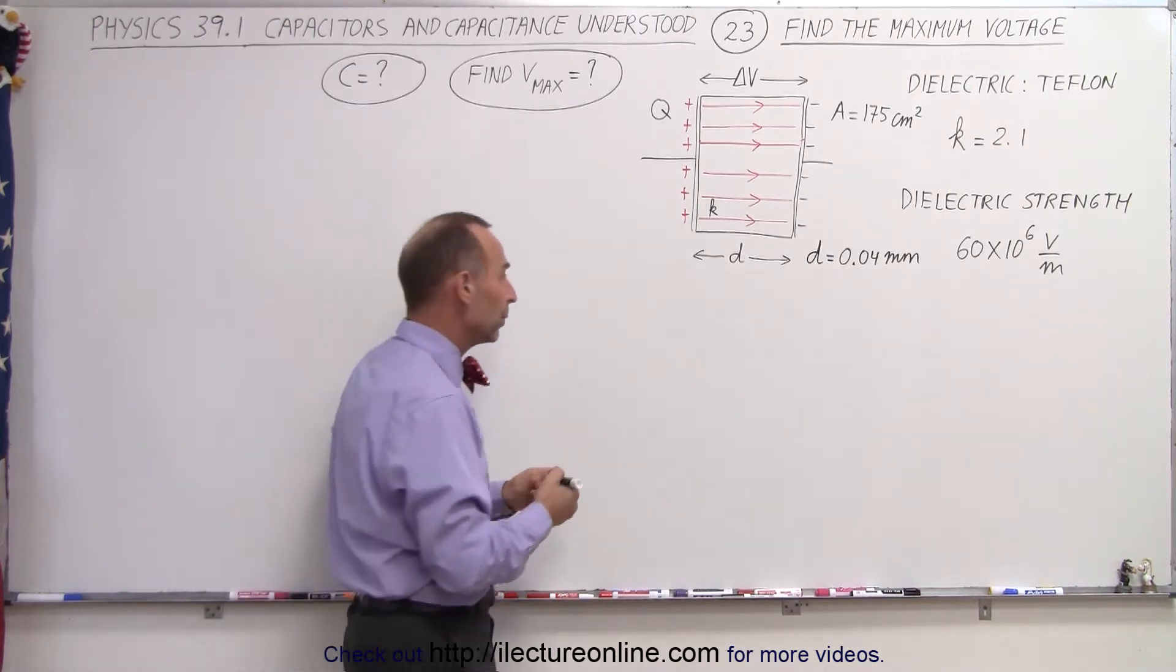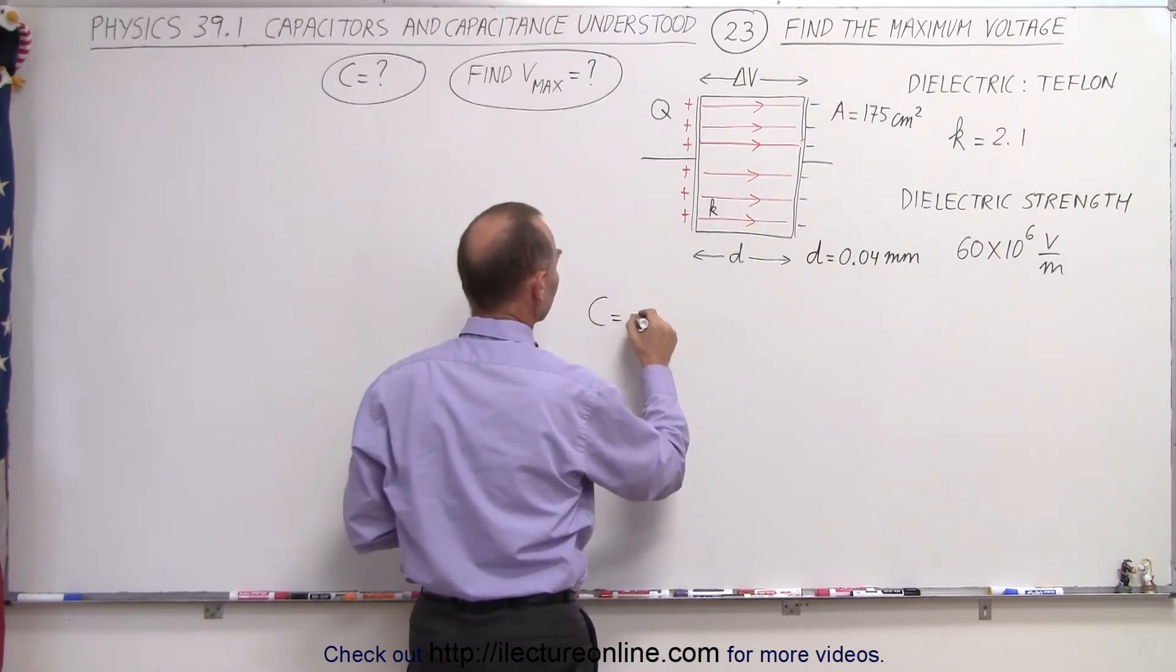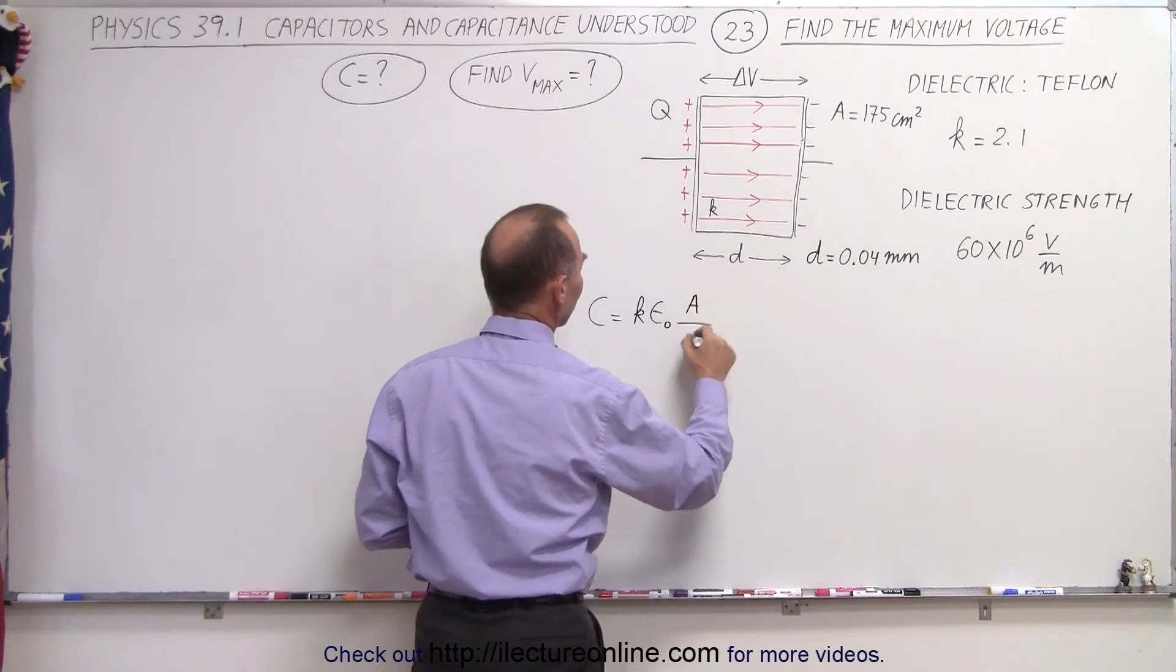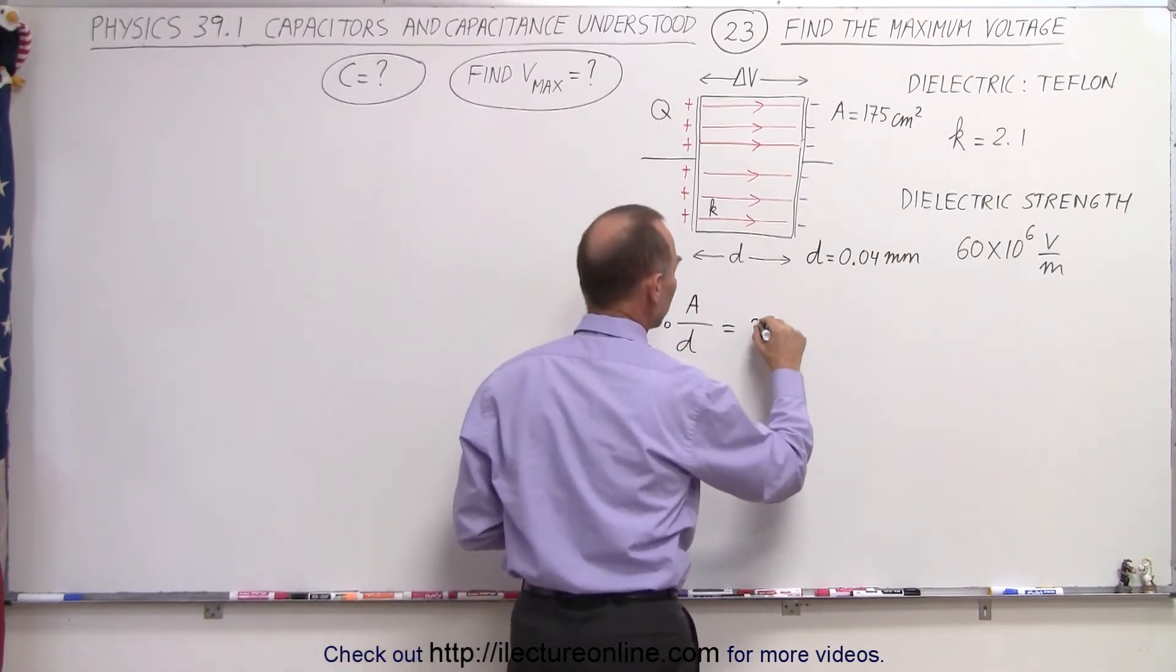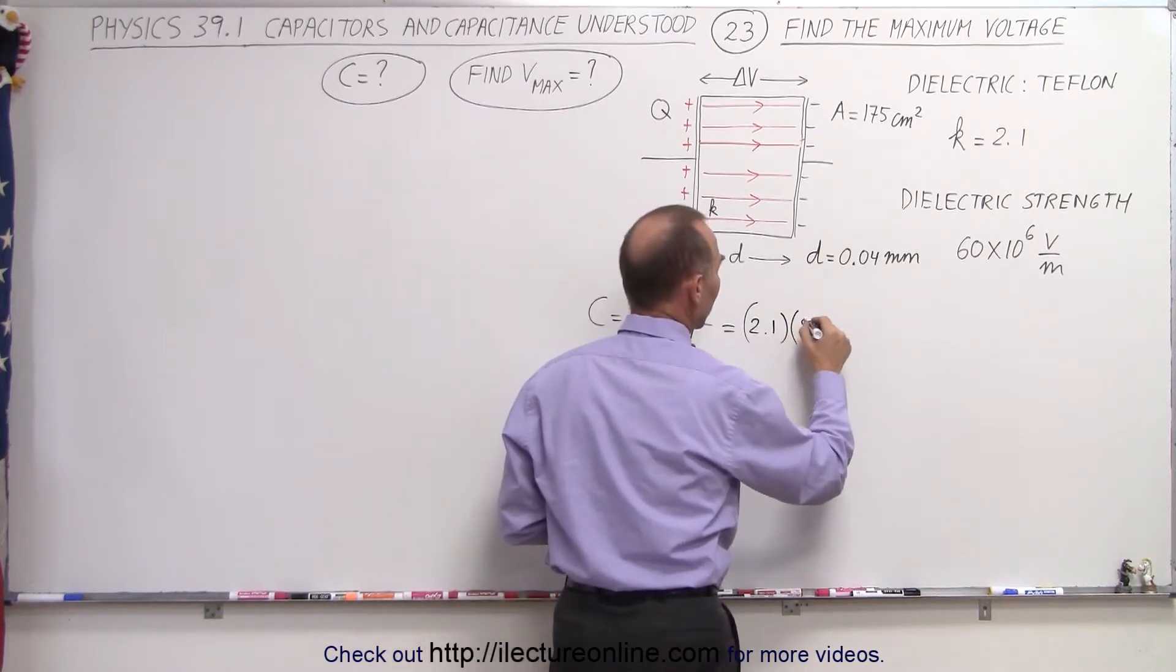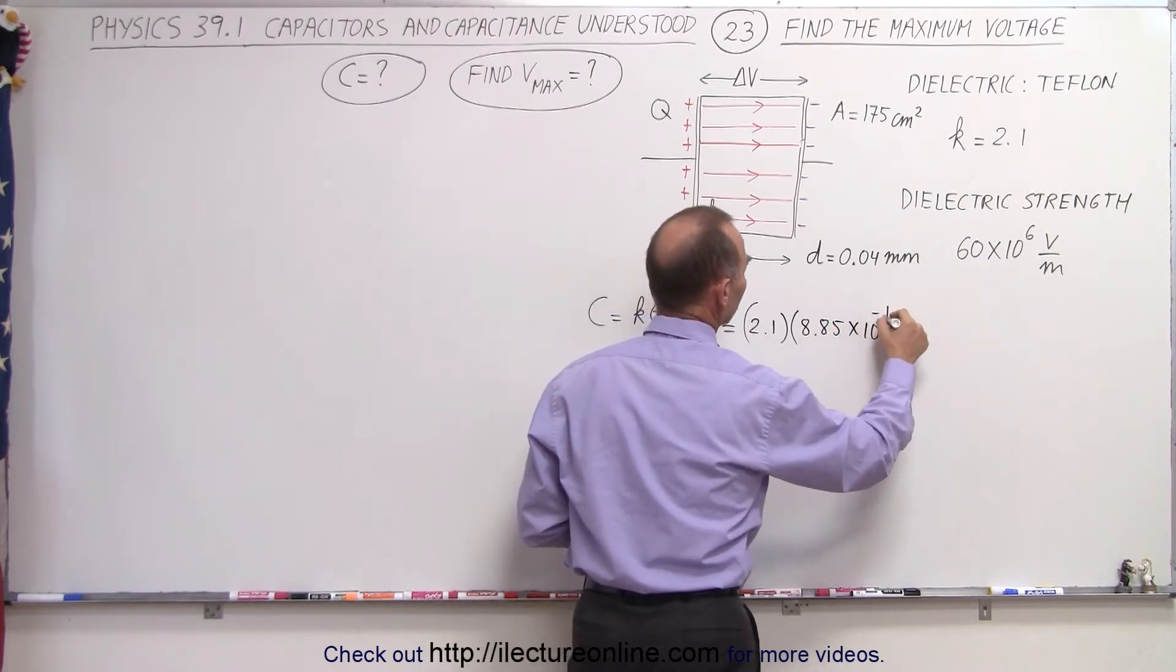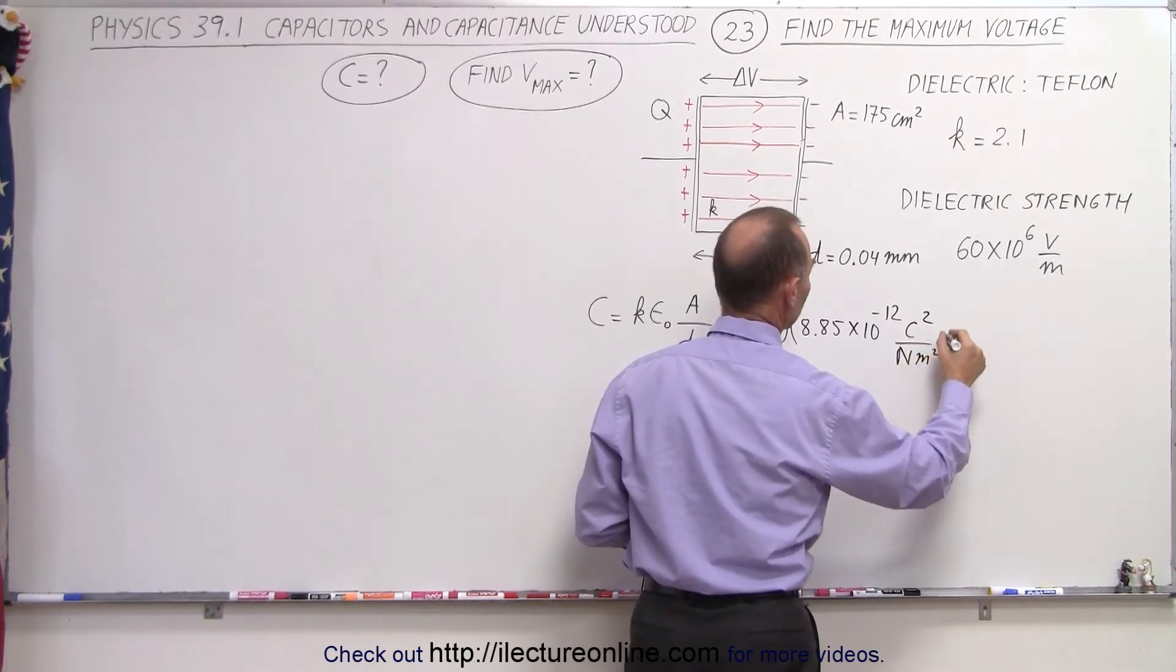To find the capacitance, we have to use the equation for a physical capacitor that capacitance is equal to K times epsilon sub-naught times the area divided by the distance between the plates. So in this case, that would be 2.1. Epsilon sub-naught is 8.85 times 10 to the minus 12. That would be Coulomb squared per Newton meter squared.